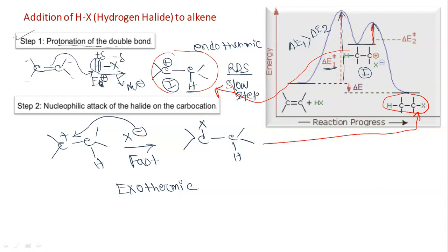This is the general mechanism. The first step, which is the slow step, is protonation of the double bond. Step 2 is the nucleophilic attack of the halide ion - this is the halide ion X minus. It may be Br minus, Cl minus, I minus, etc. This is the general mechanism.